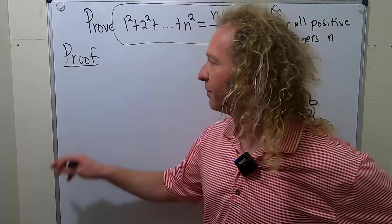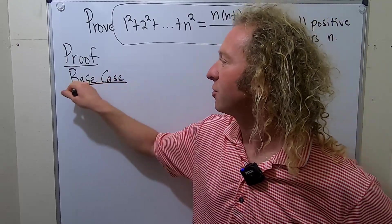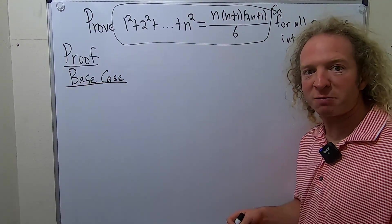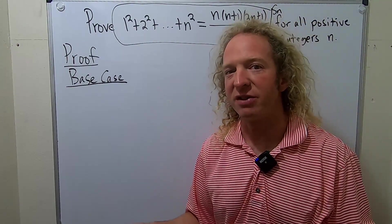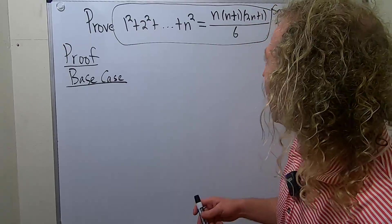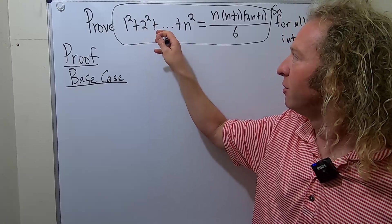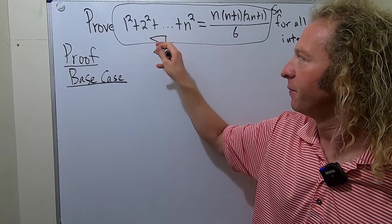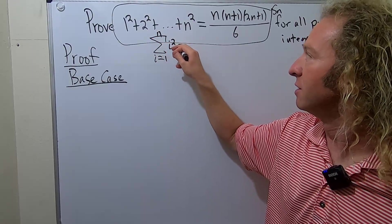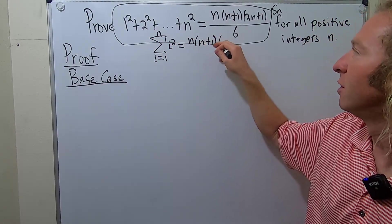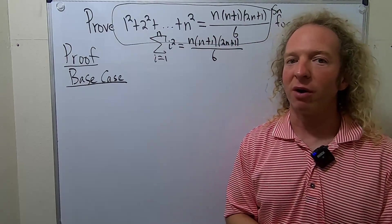So to do that, we'll start with what's called the base case. In the base case, you have to show that the statement is true for the smallest positive integer that you're working with. In this case, the smallest positive integer is 1, since it doesn't give us any other restrictions. Before we do that, though, it might be a good idea to rewrite this in terms of summation notation. You can think of the left-hand side as the finite sum, as i runs from 1 to n of i squared. And then this is equal to n(n+1)(2n+1)/6. So this is another way of thinking of what we're trying to prove.